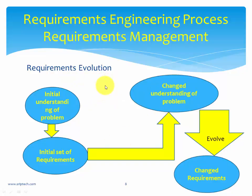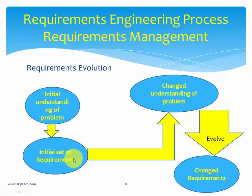Diagrammatically, evolution of requirements works like this: initially you have an initial understanding of a problem, and from that you had an initial set of requirements. The software product was realized. After some time, when the software is operational, there is a changed understanding of the problem — end users identify a need for change in process, an organizational change, or a change in business strategy — which gives rise to a new set of requirements.